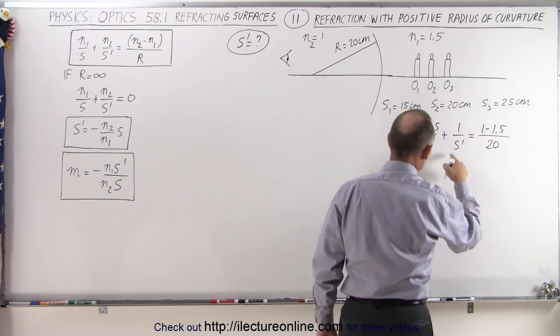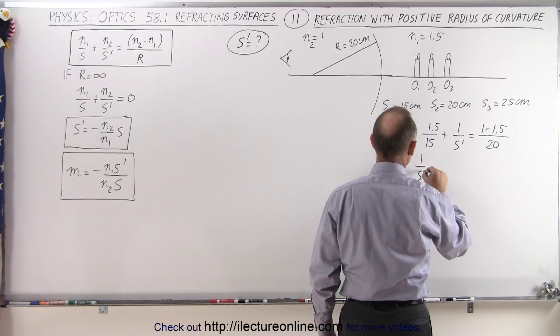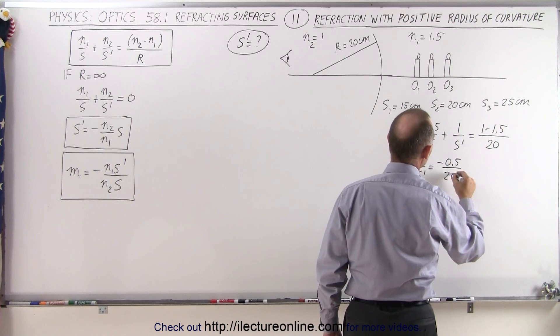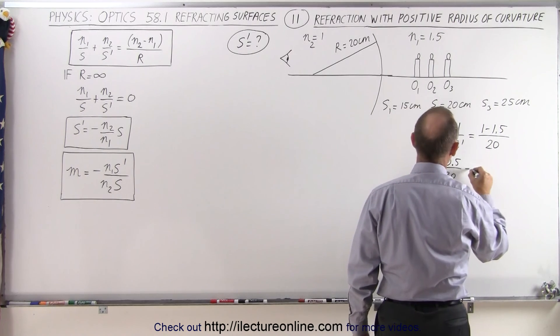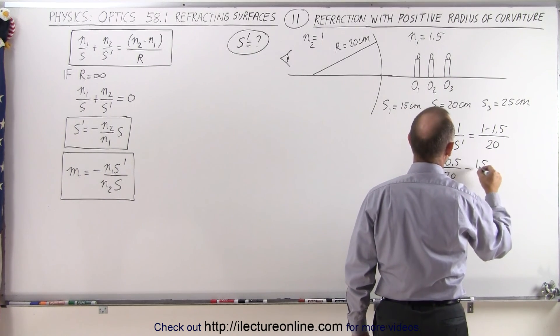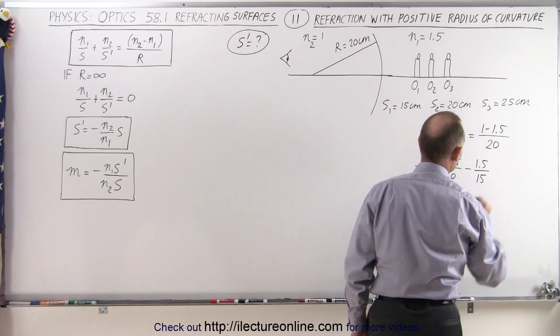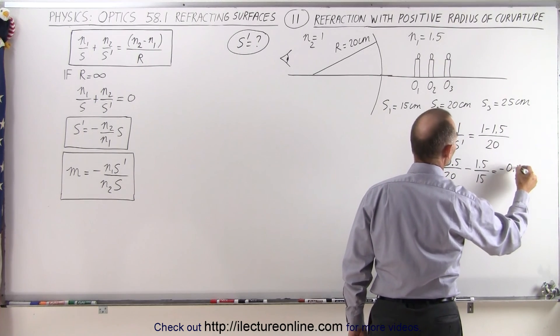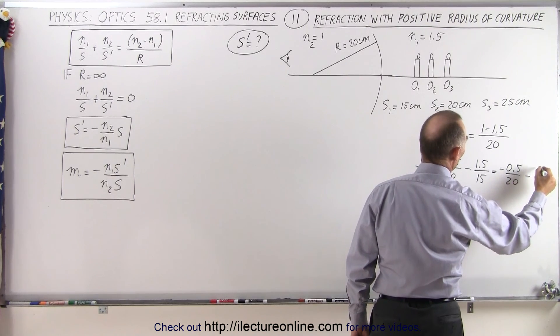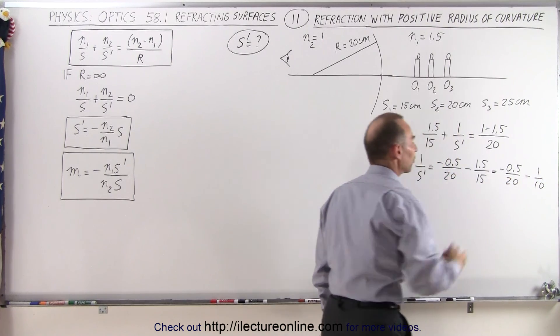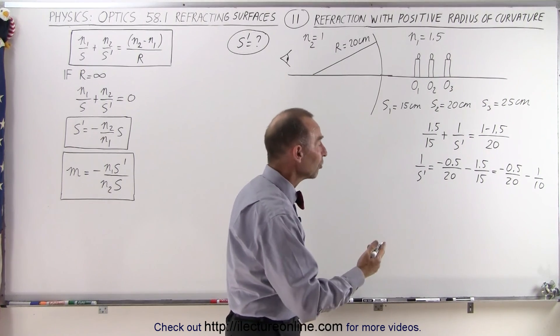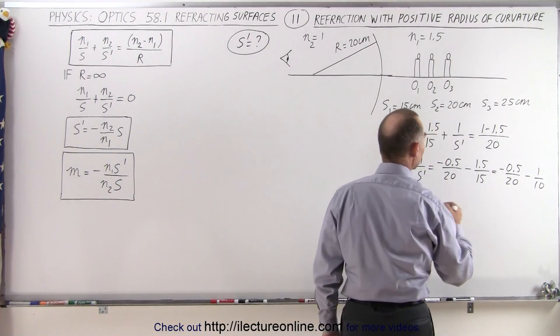So solving for 1 over S', we have 1 over S' is equal to minus 0.5 over 20, move that across, we get minus 1.5 over 15. We can simplify that to minus 0.5 over 20 minus 1 over 10, because 1.5 over 15 is the same as 1 over 10. Now it's easier to find the common denominator of 20.